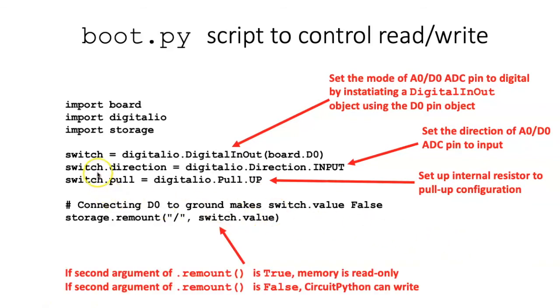Once I've created the switch object and set its characteristics, I'm able to read the value attribute of the switch. And that's going to tell me whether the input pad is at 3 volts or at 0 volts or ground.